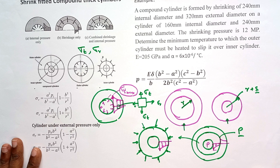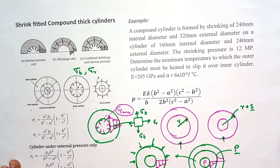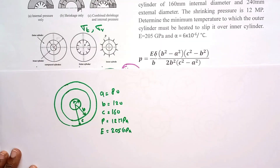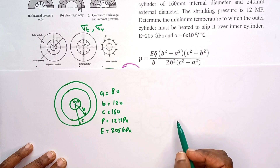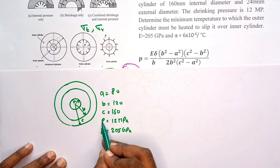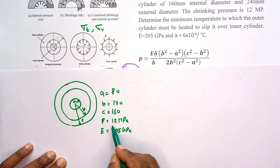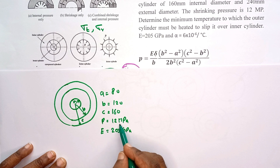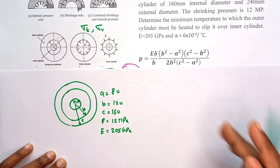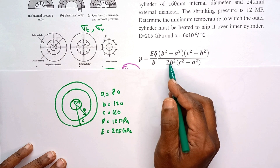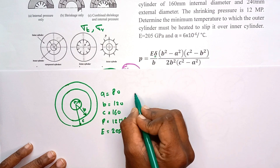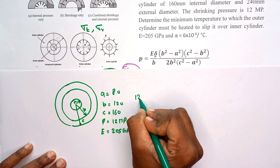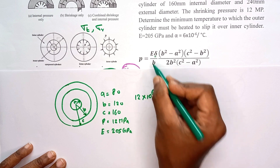This problem is also related to the shrink fitting process. Here is the diagram related to the shrink fitting problem. The developed interface pressure is equal to 12 megapascal. In order to achieve 12 megapascal interface pressure, we are going to find the delta required. To find delta we are going to use the standard equation and substitute the values: P equals 12 times 10 to the power of 6, and the elastic modulus E equals 205 times 10 to the power of 9.